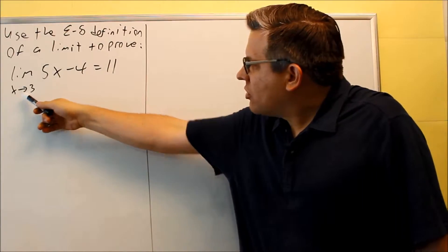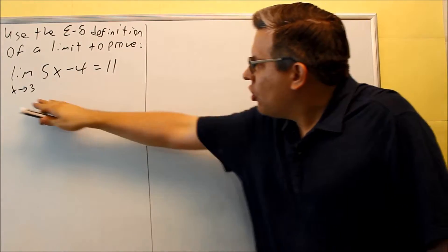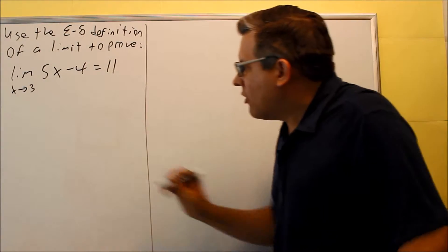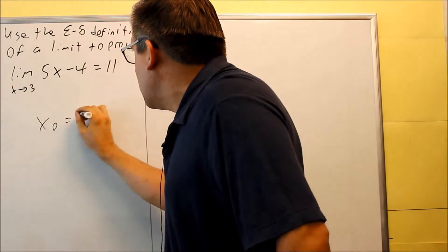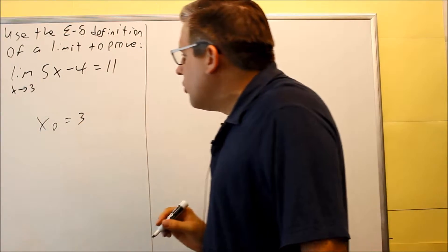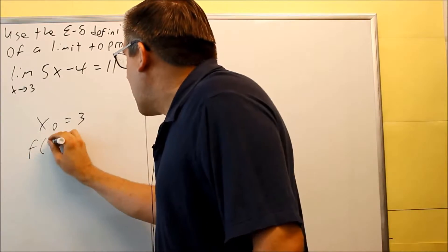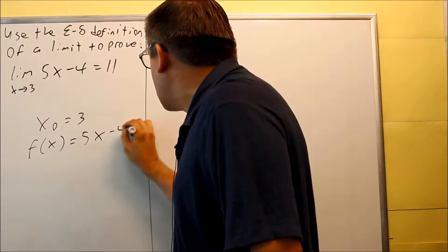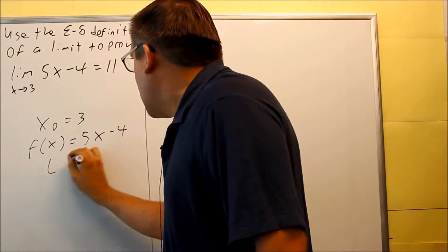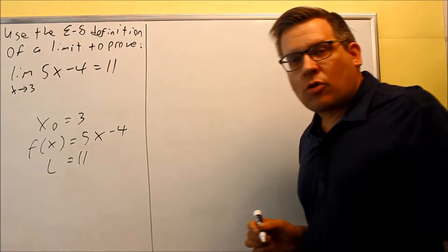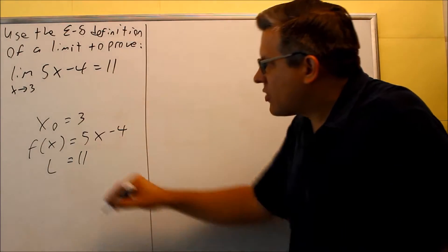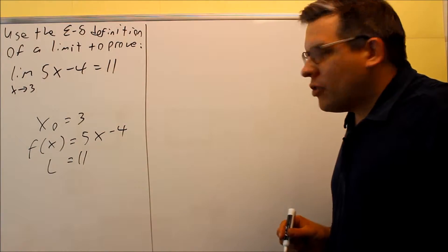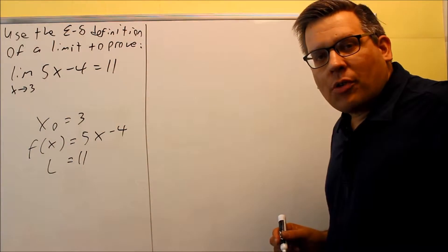We need to first indicate what all our variables are given in this original problem. What we're given here is x₀ equals 3, f(x) is the part after the limit — that's 5x minus 4 — and L equals 11, that's your limit. Those are the three pieces of preliminary information provided for this particular problem.